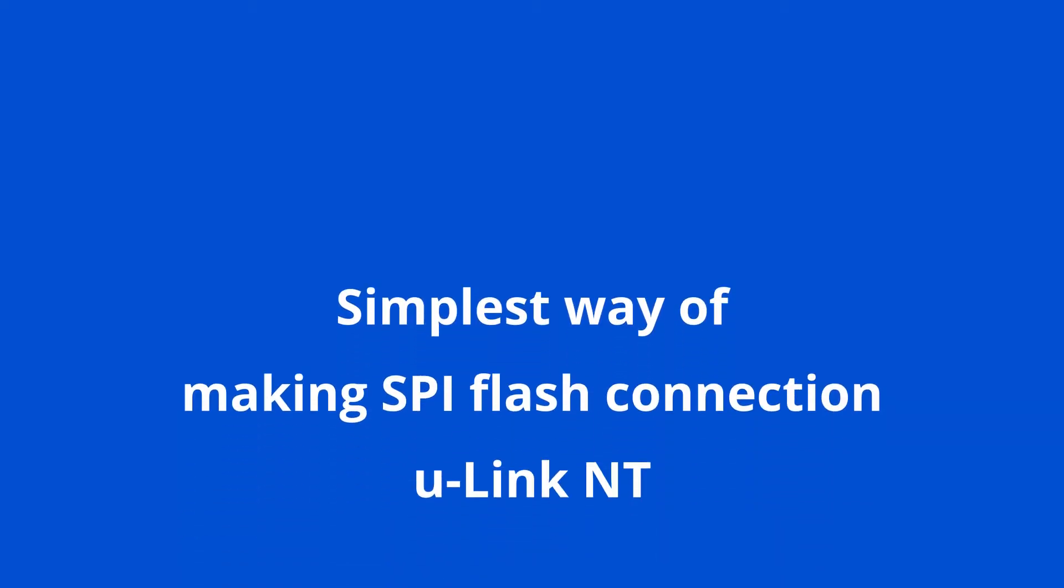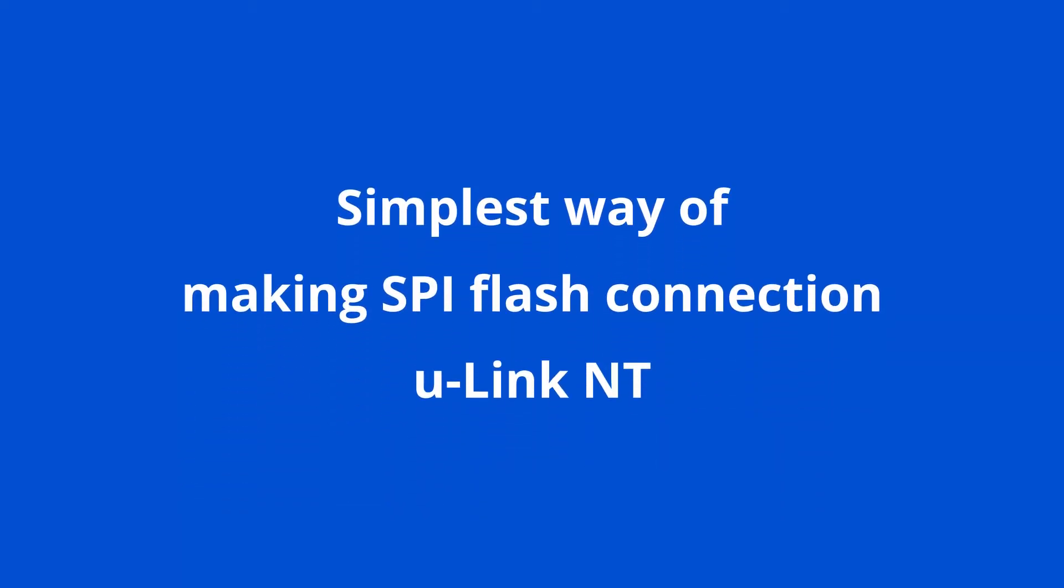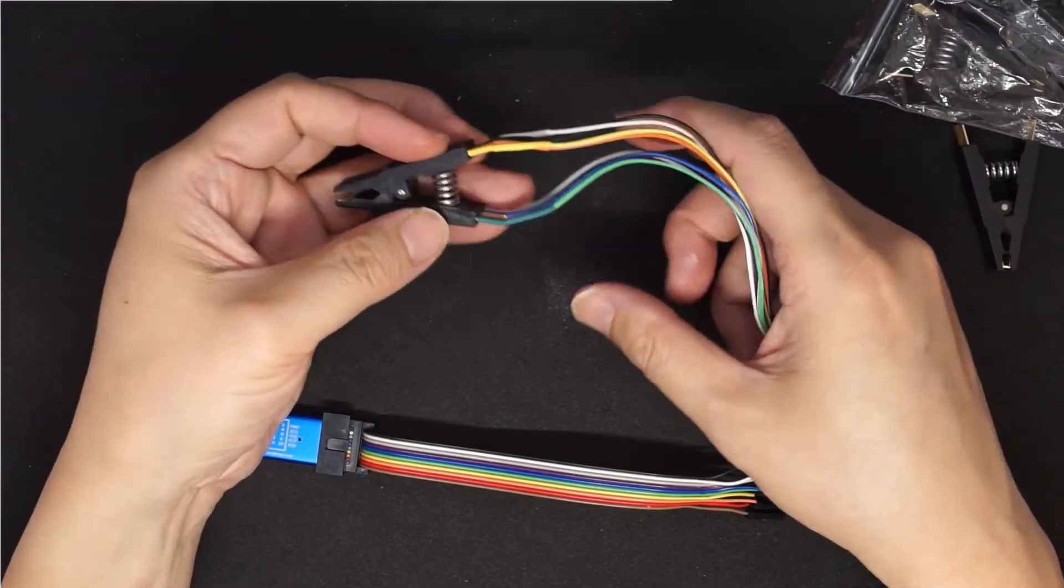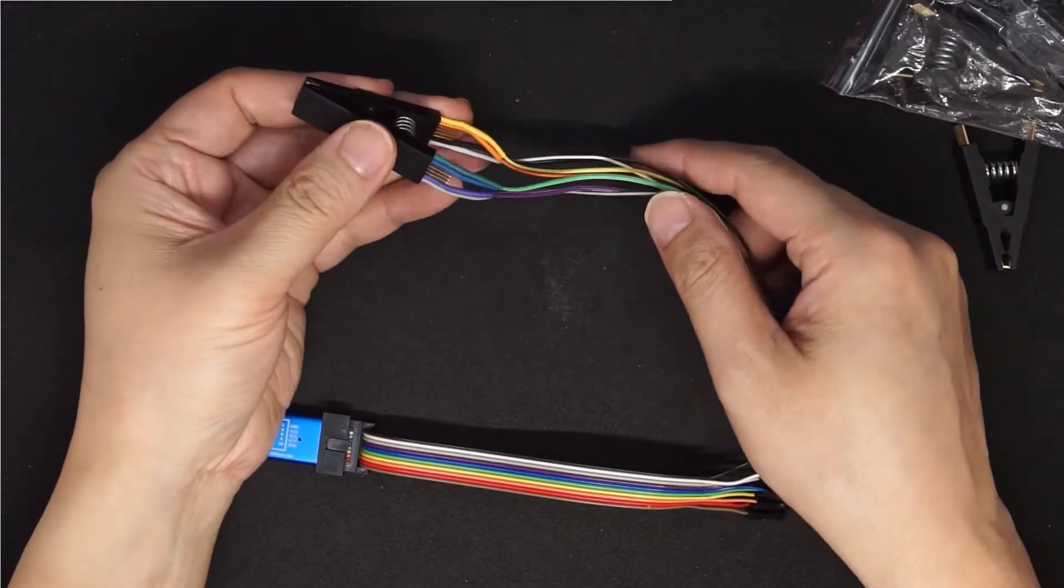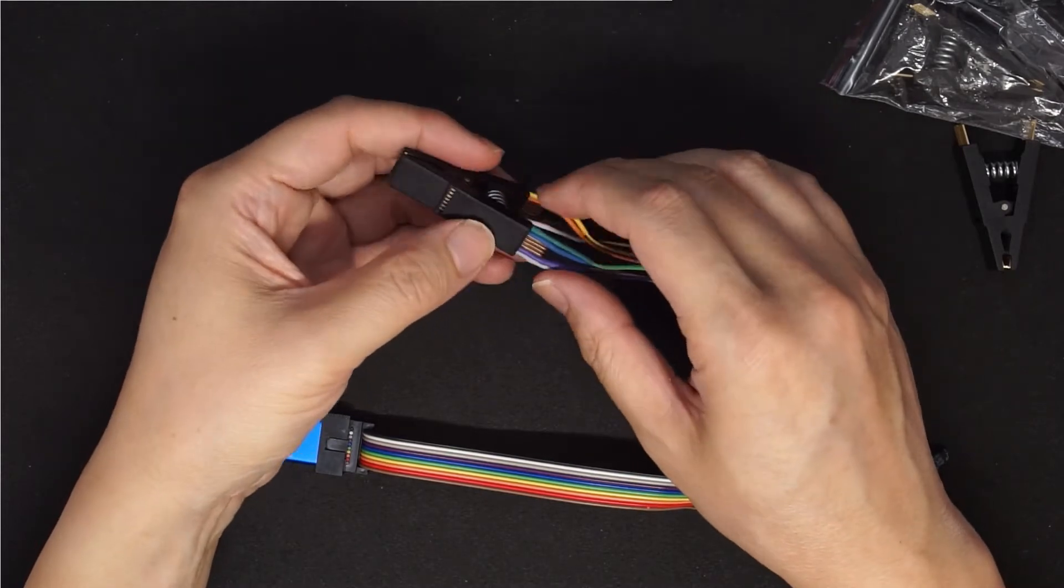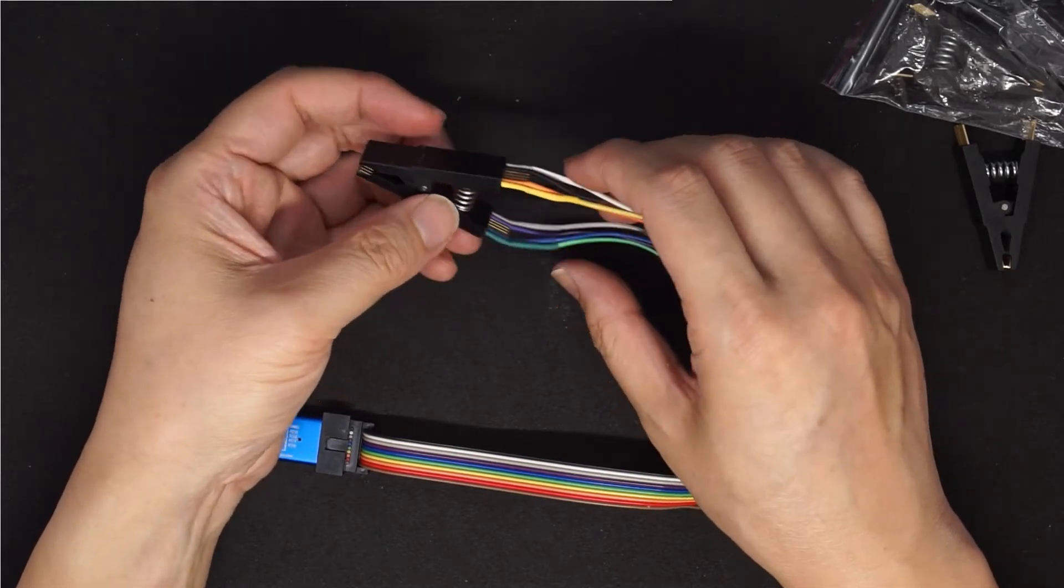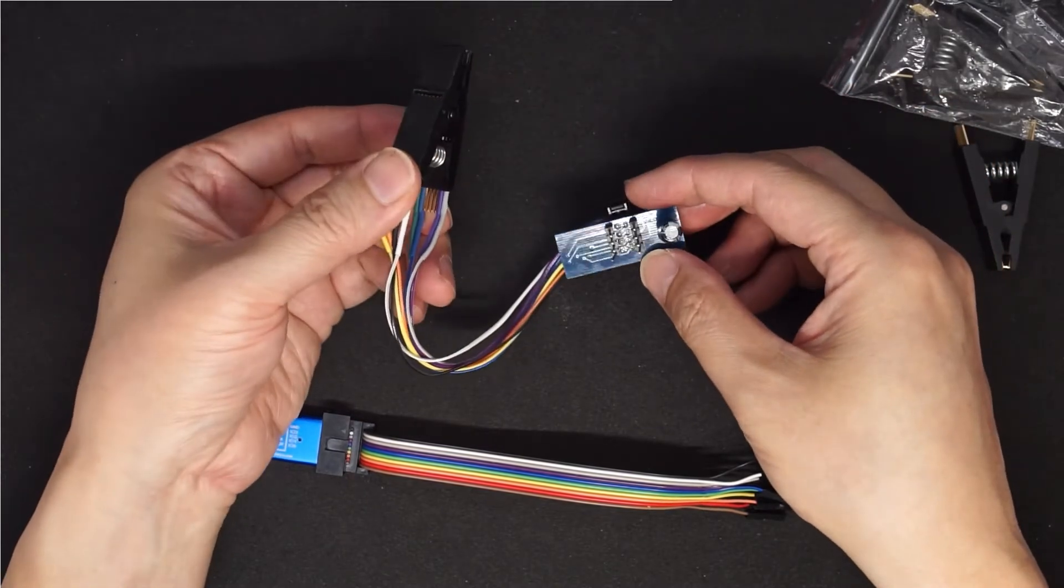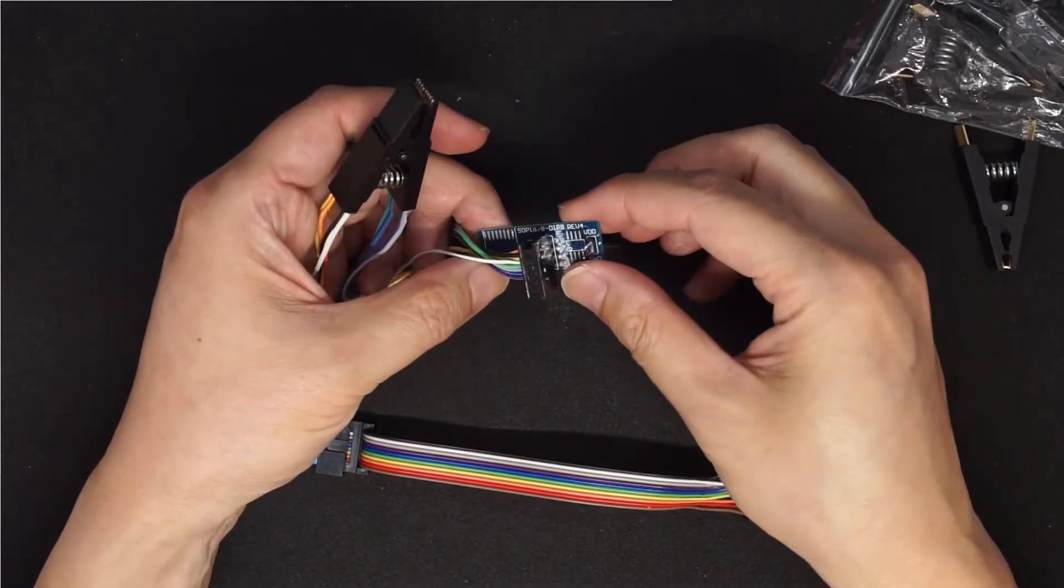The simplest way of making SPI flash connection using U-Link NT. In my previous video when I programmed 6121 and 6141 and other modems with the 16-pin SPI flash, I always use the combination of this clip as well as this adapter board.